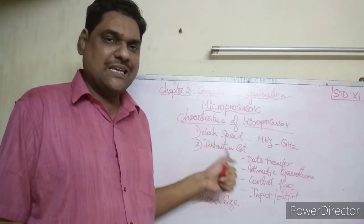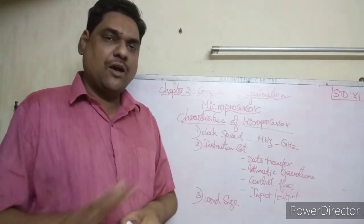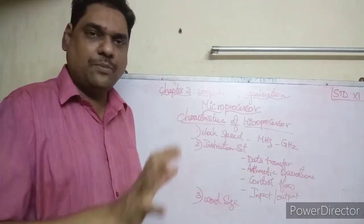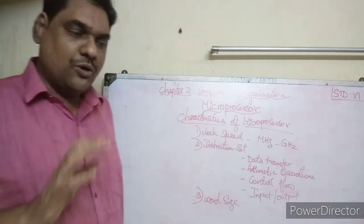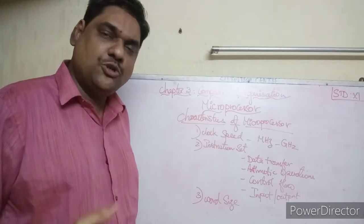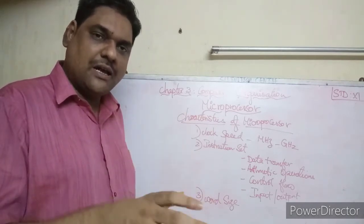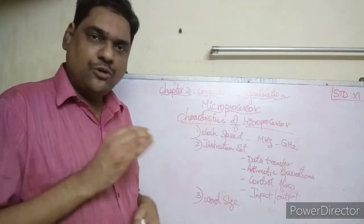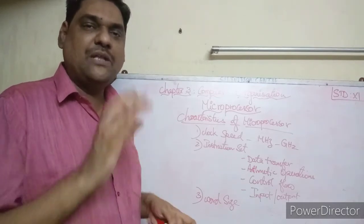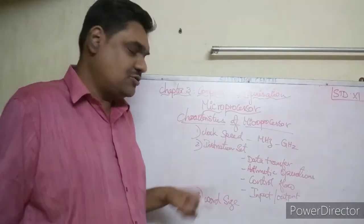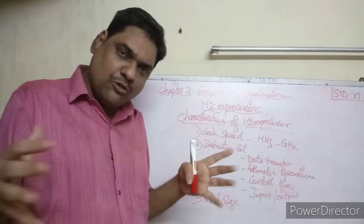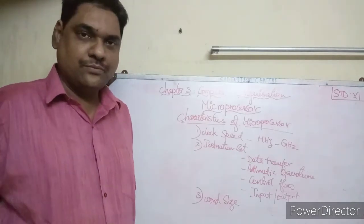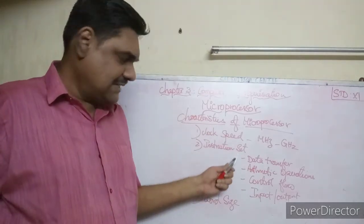The second characteristic is the instruction set. A computer has a set of instructions available to it automatically. These are the instructions stored in the computer, and they tell the computer what jobs to perform. A group of instructions given to the computer to do a particular job is called an instruction set, and these instructions are stored in memory.